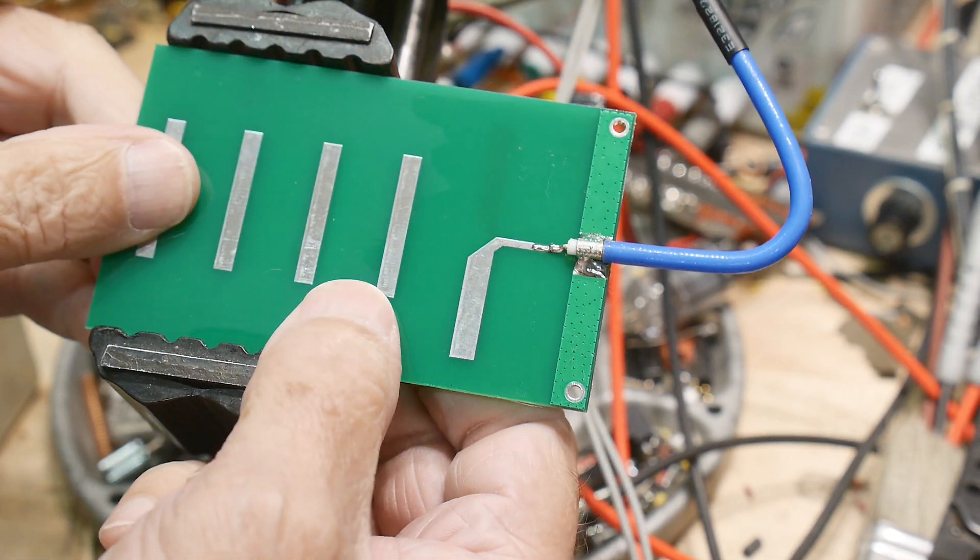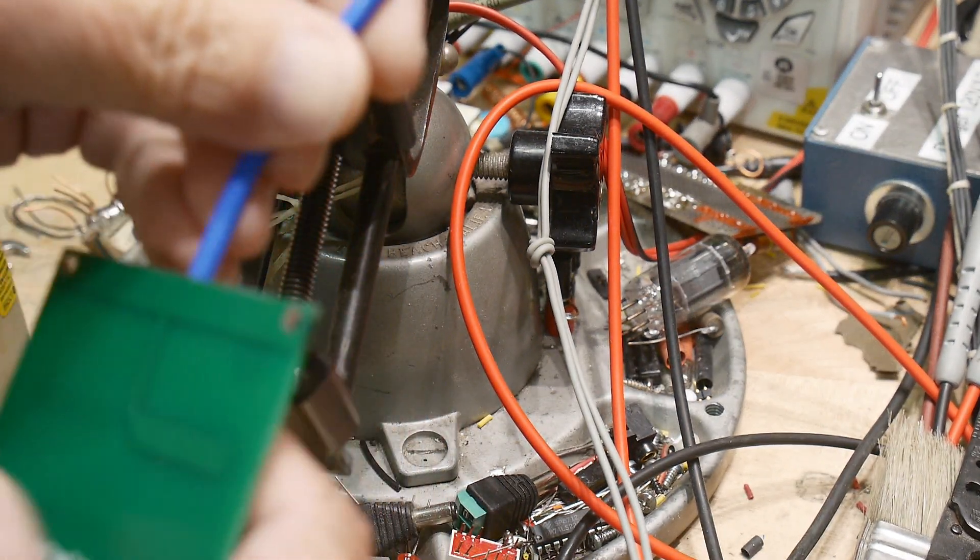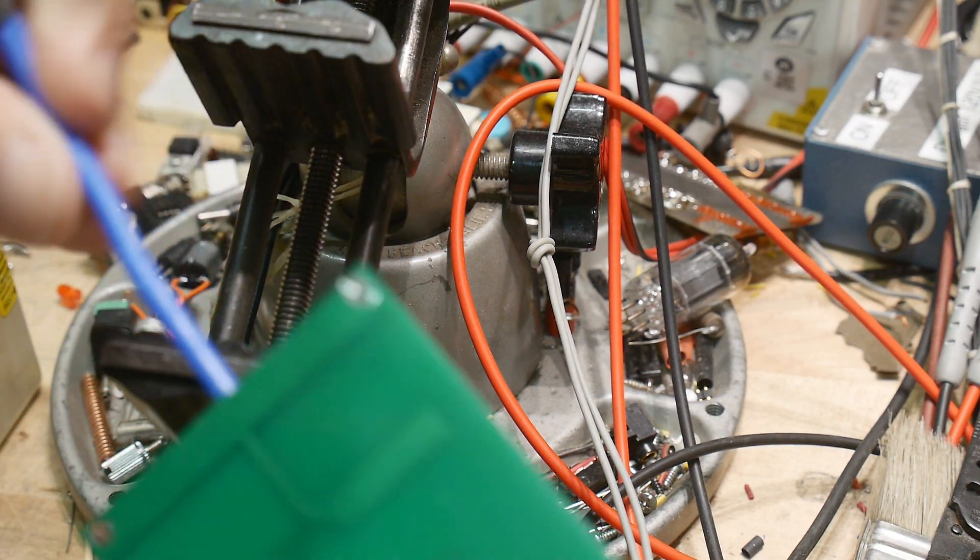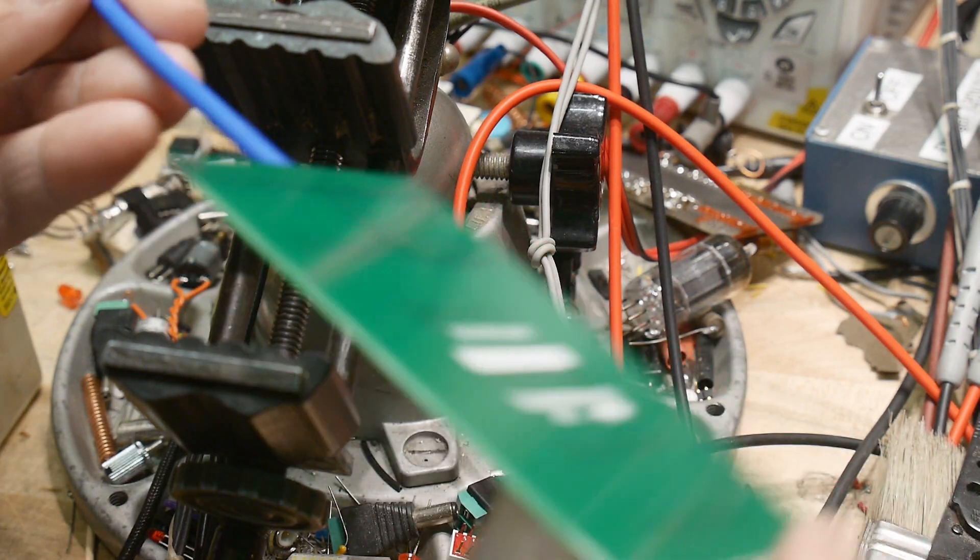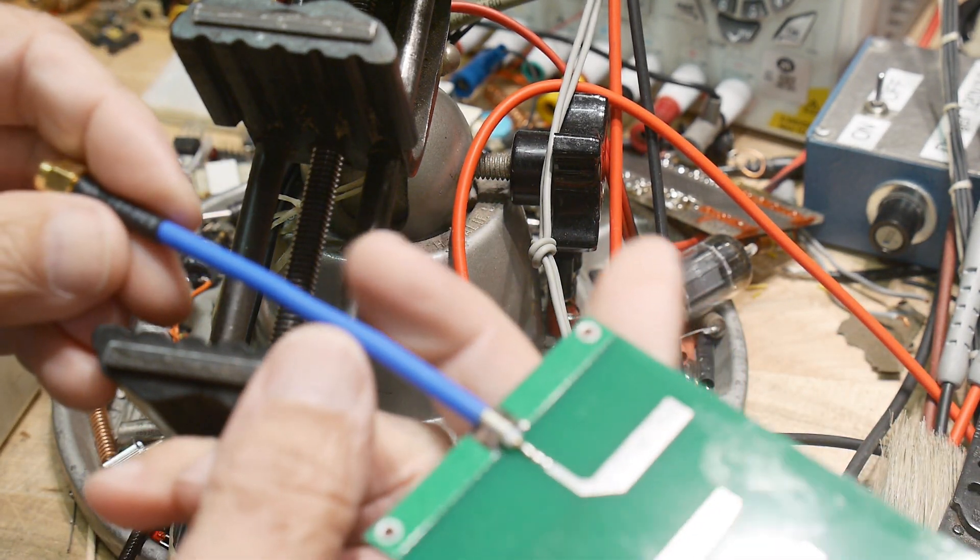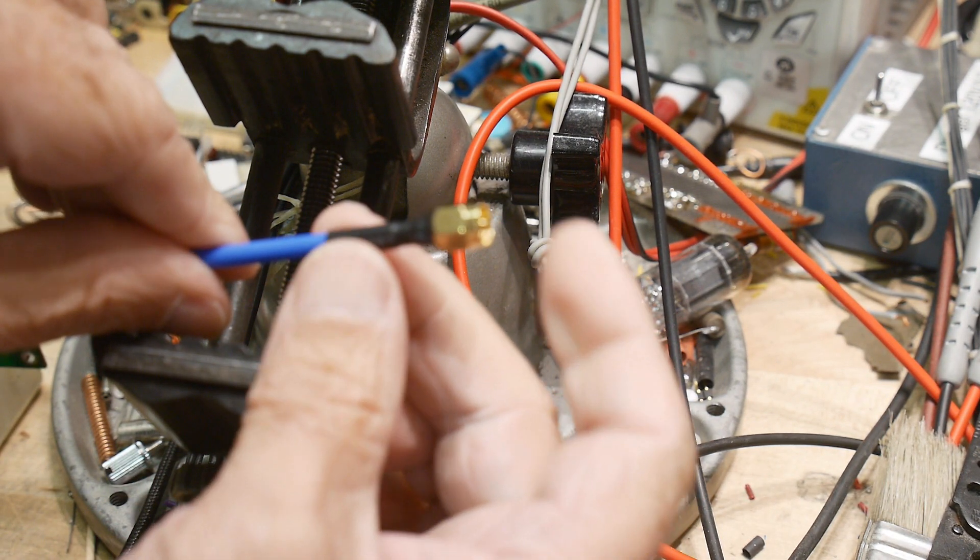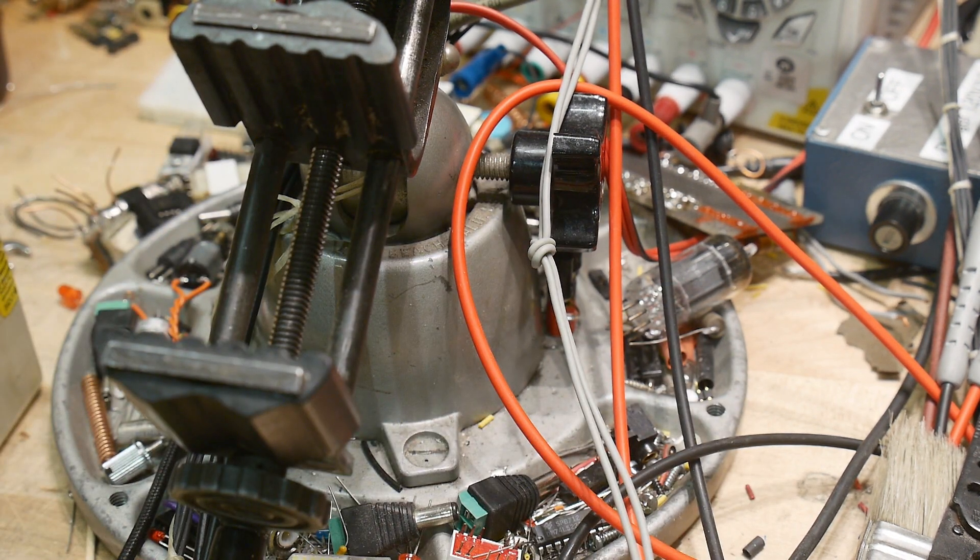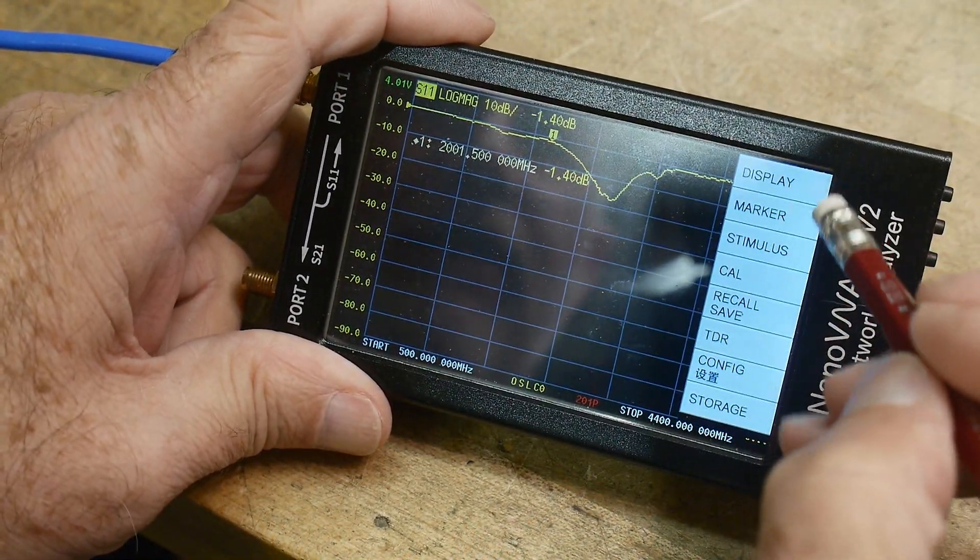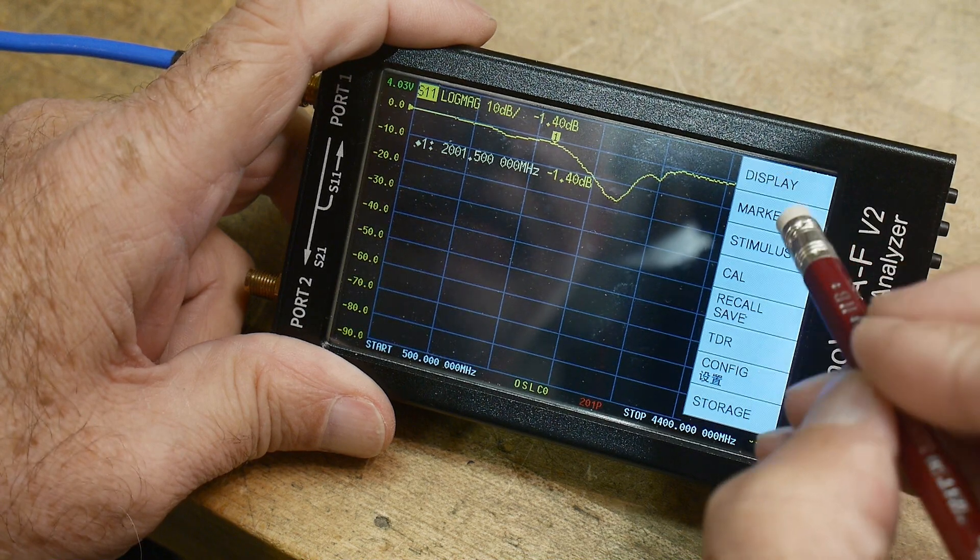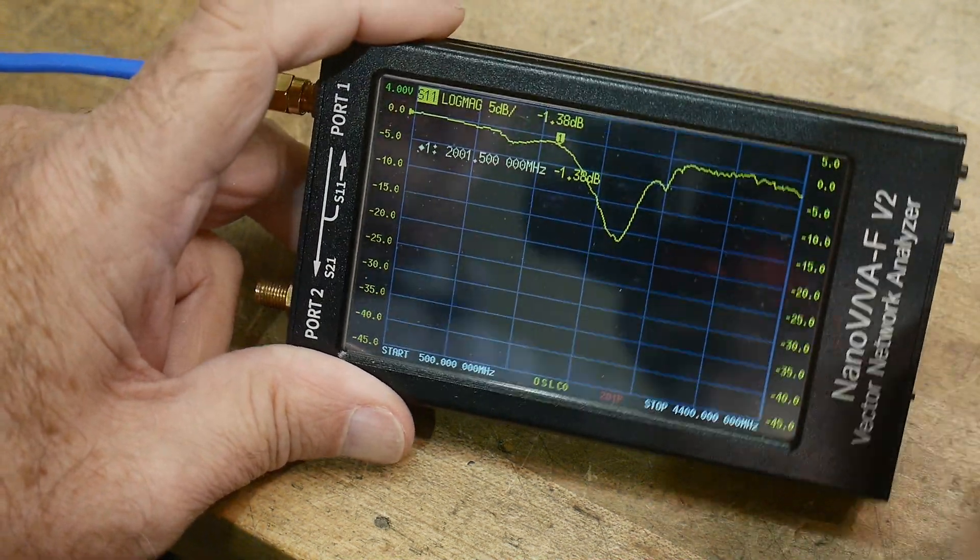Anyway, all right. So I think this is going to be much better. Let's hook it up to the VNA and see how it does. I don't see any markings on the coax what type it is. And it does enter this connector a bit strange but I guess that's okay. Yeah, we'll give it a try.